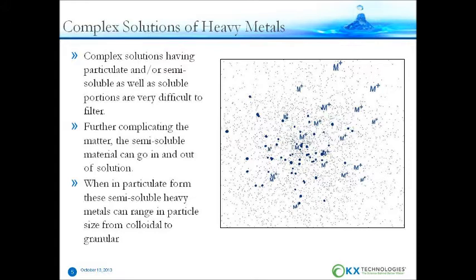There are really two different types of particulates possible. There are metal zero particulates, which are fairly stable, but can still leach out soluble metal ions depending on the pH. And there are also semi-soluble metal salts, where solubility is very dependent on pH, ORP, or other water characteristics.